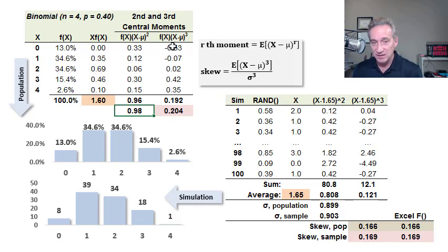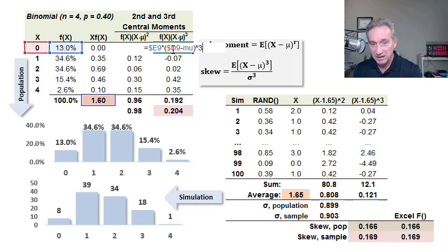So then in this column, I have the third central moment, same pattern. For each cell here, I have f of x, 13%, multiplied by x of 0 minus the mean of 1.6. But this difference, instead of being squared, is cubed, because we're doing the third central moment.